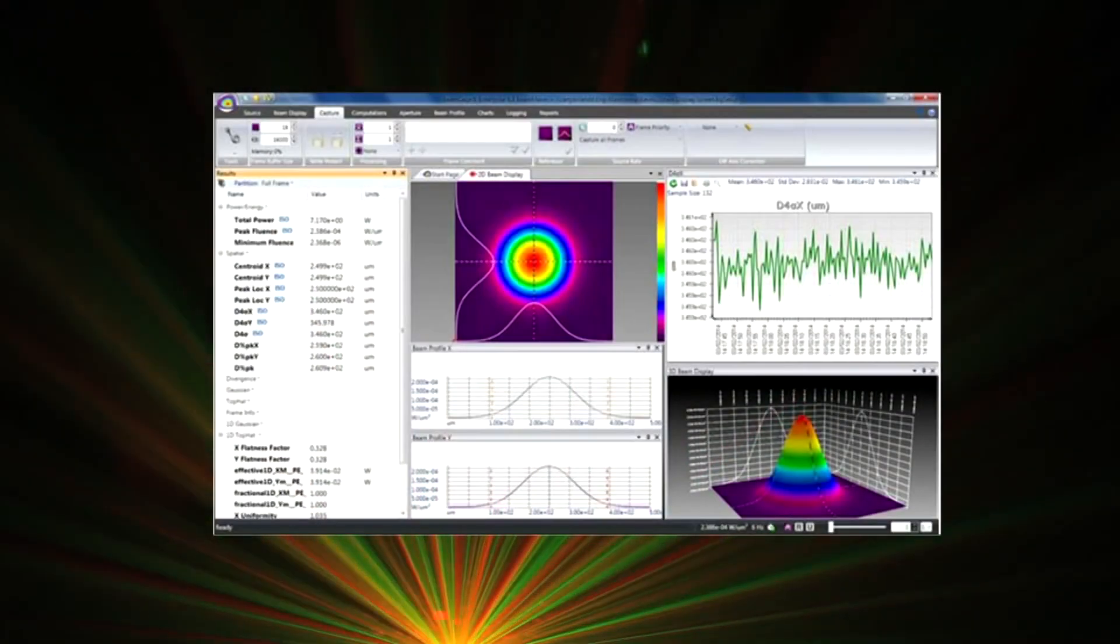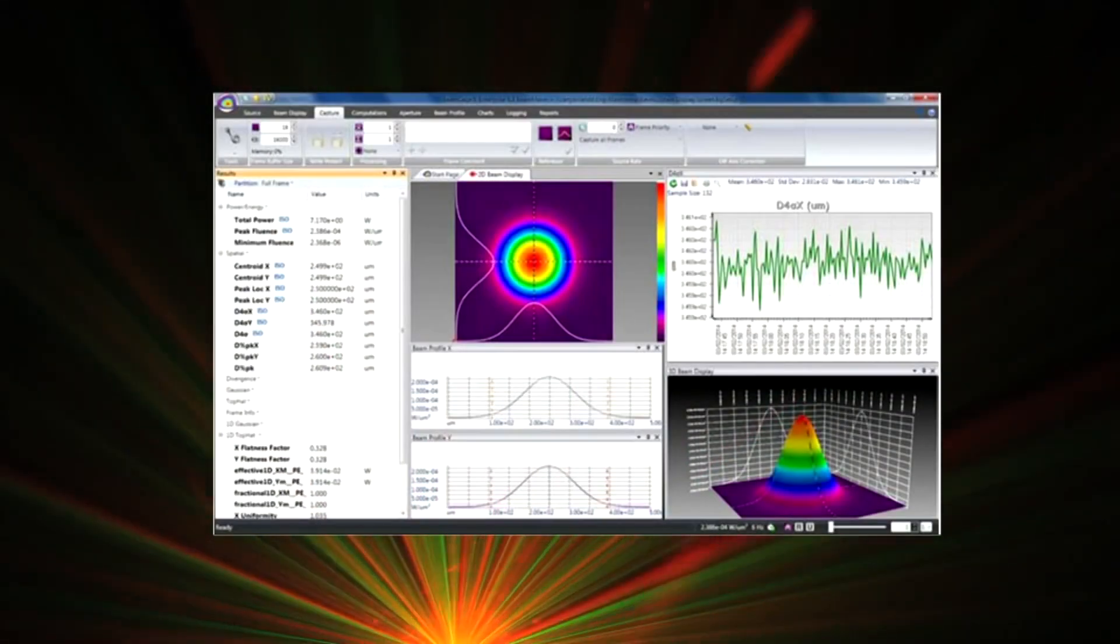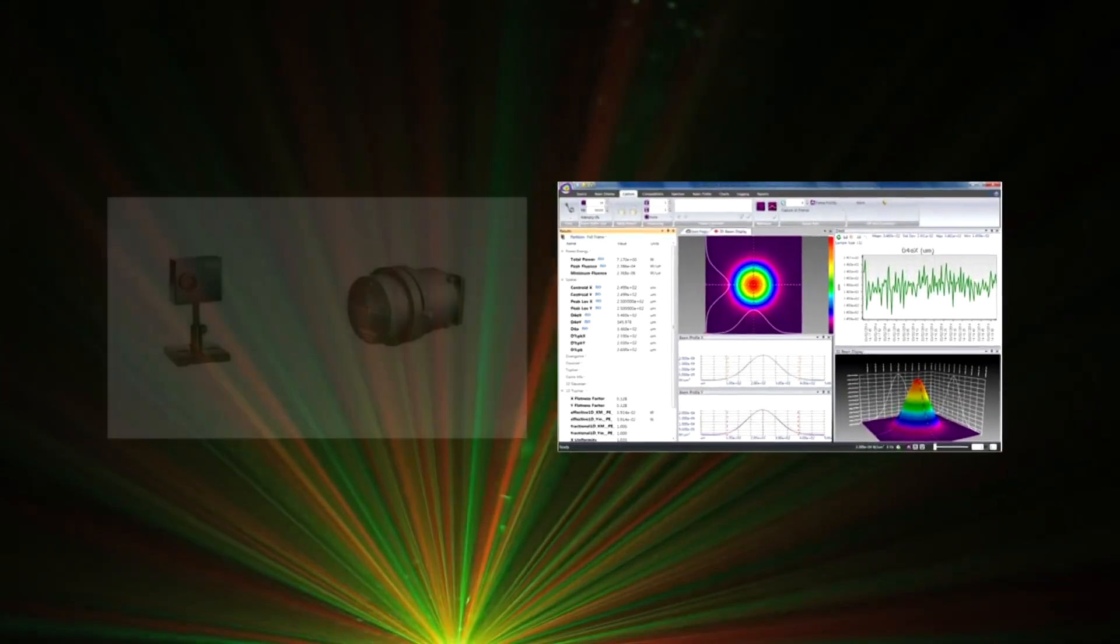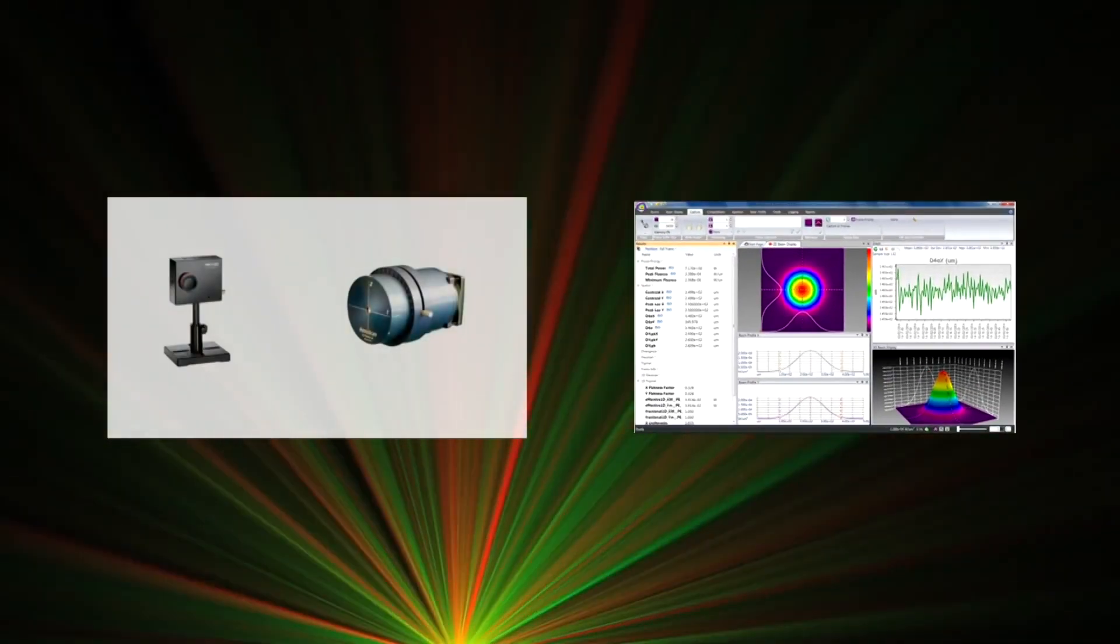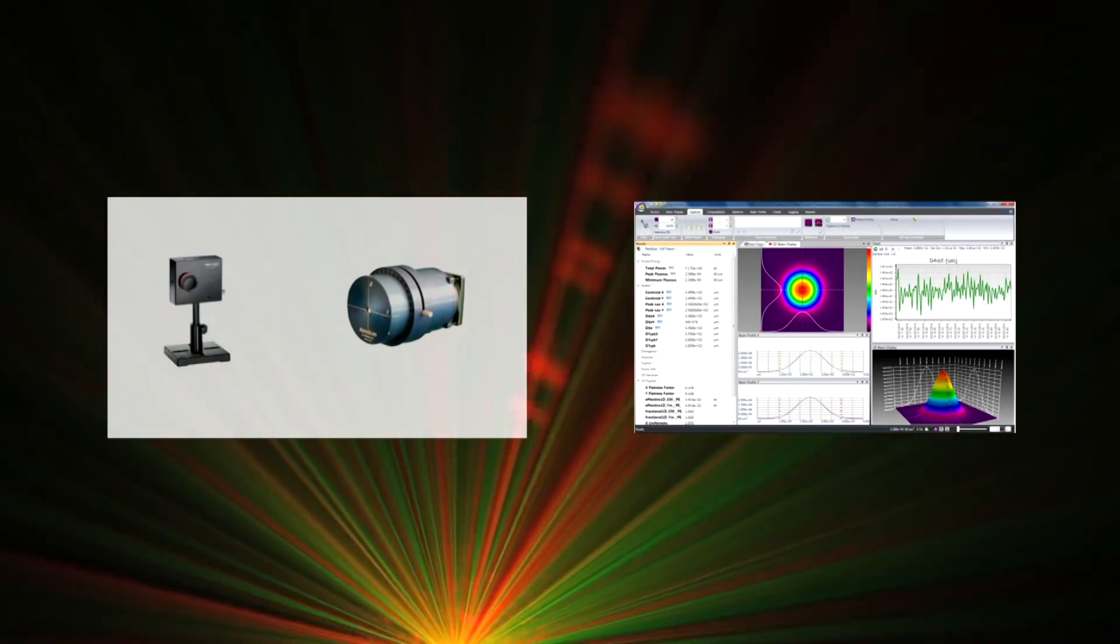Focal spot size and location, along with a whole host of beam characteristics, are typically measured using a beam profiler, either CCD camera based or scanning slit based.